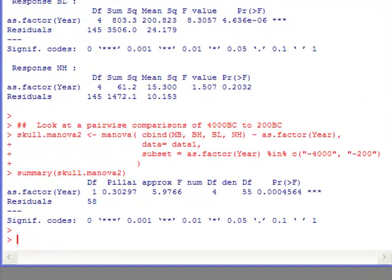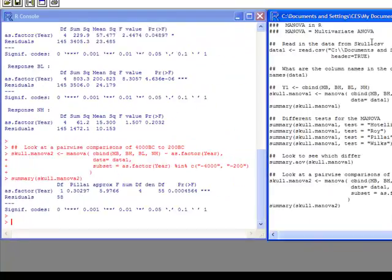So based on what we have from our subset here, we have our output. And we can look and see that our P value associated with this comparison, this pairwise comparison, is highly significant. So we would say that the skull dimensions between 4000 BC and 200 BC are significant.